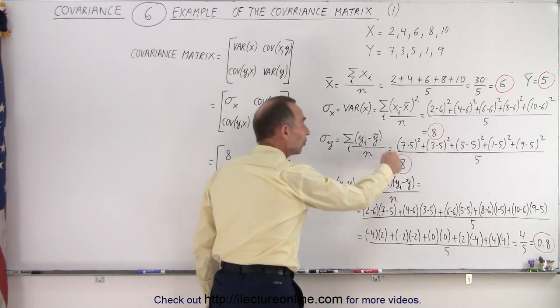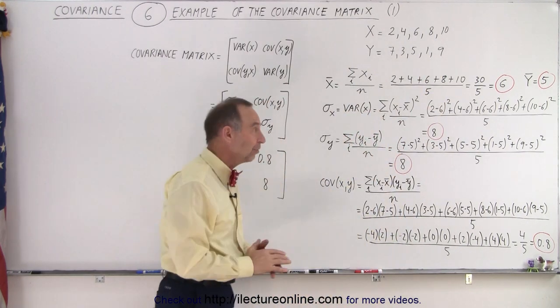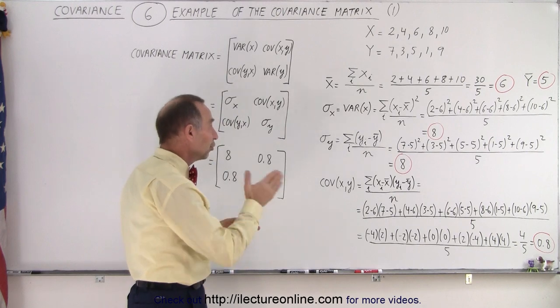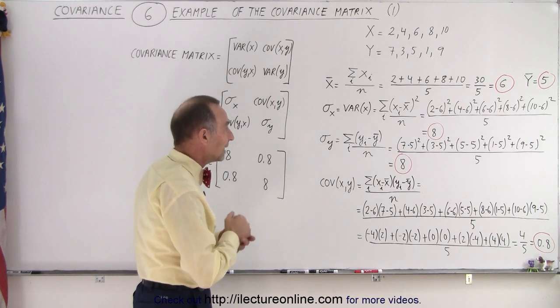We also get 8 for that as well. Alright, so the variances of the two data sets are 8 in each case.